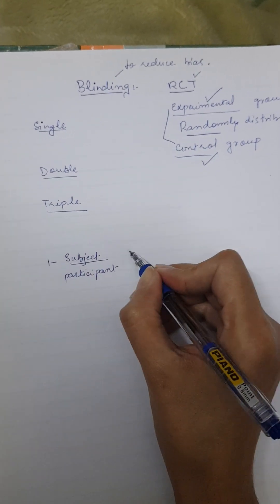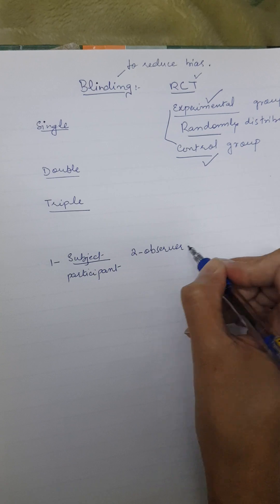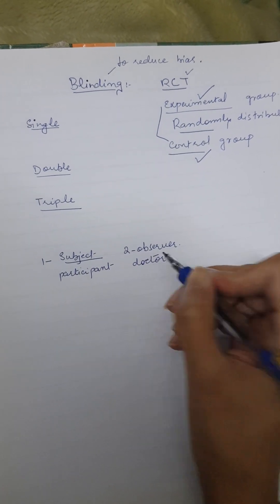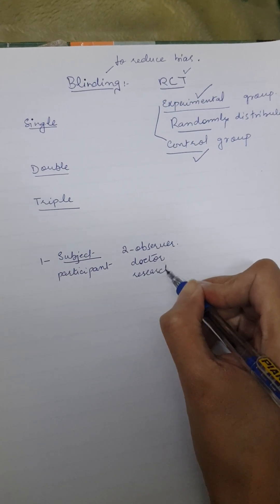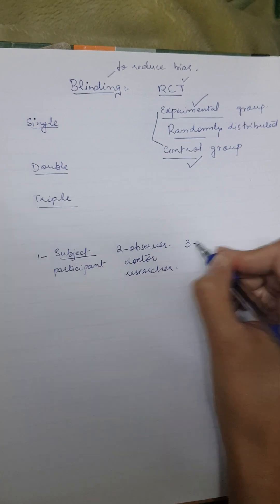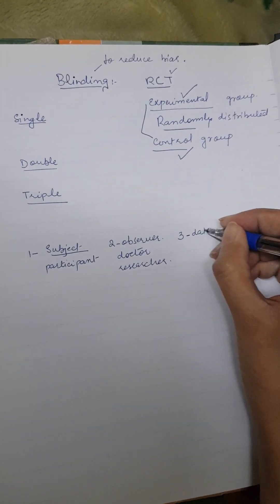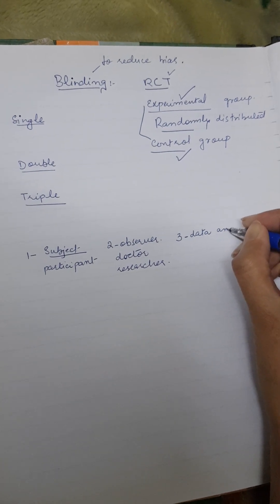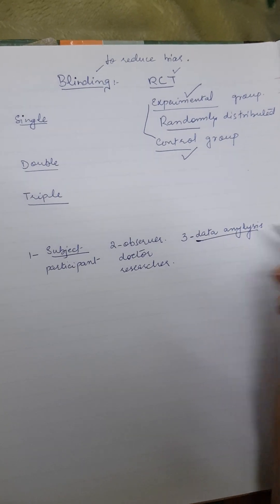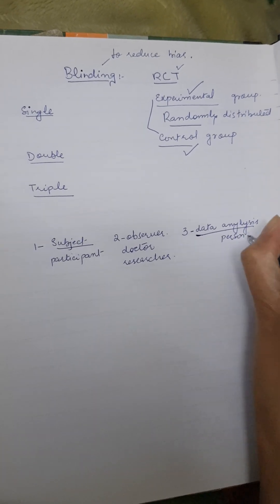Subject hai. Then we have the observer. Observer hai, who usually is a doctor, practitioner, or researcher. Different words can be used. And then at the end of the day, third, we have a person who is going to do the data analysis. A person who is doing the data analysis. These are the three people.